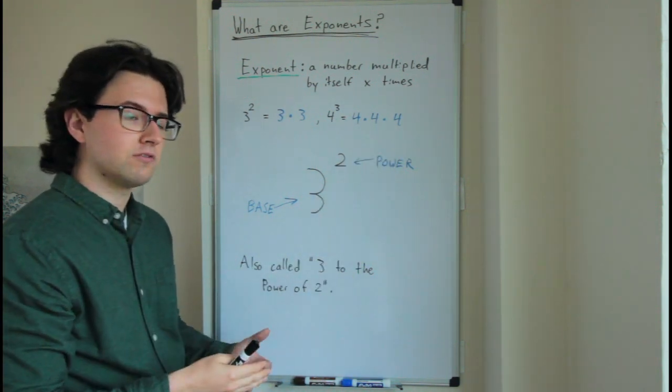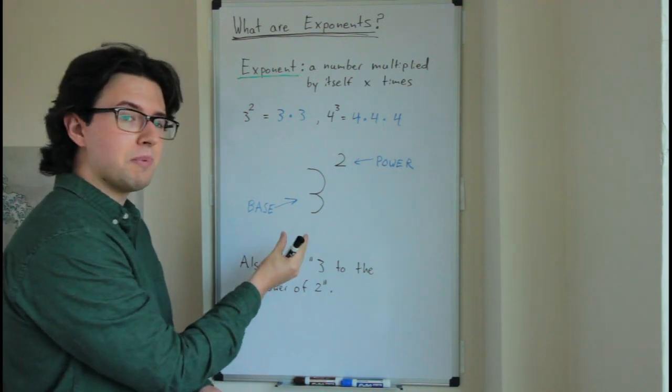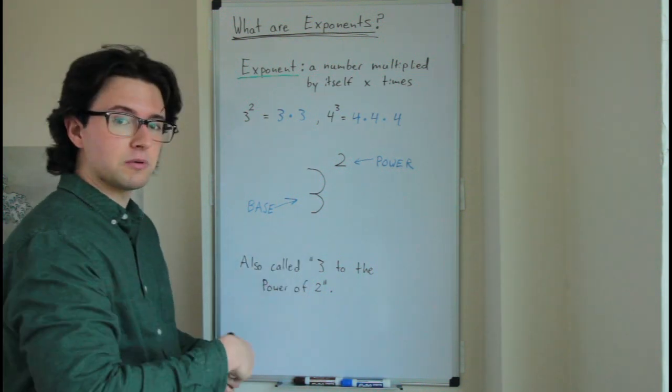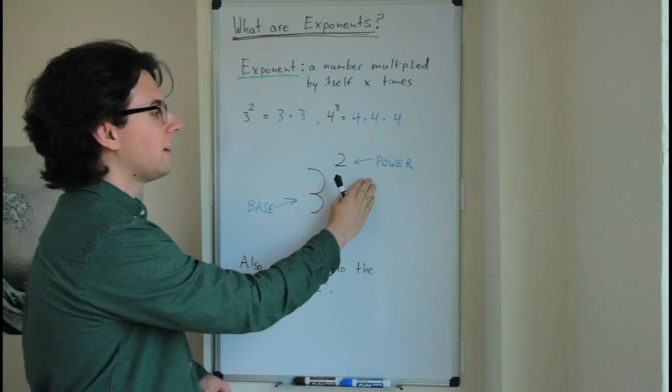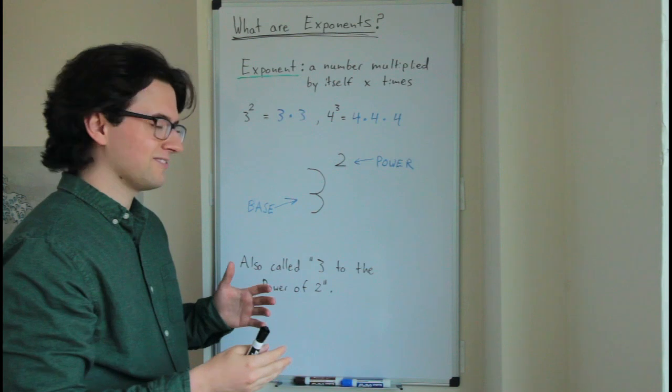Now I've been saying 'to the power of.' That's because an exponent is made up of a base, which is the bottom number, which is the number that's going to be multiplied by itself, and then a power, which tells us how many times we multiply that base.